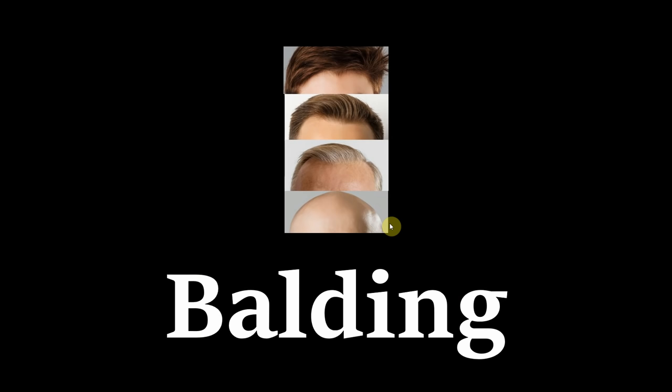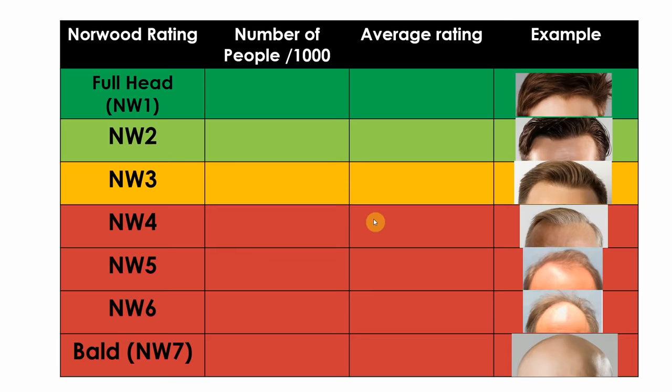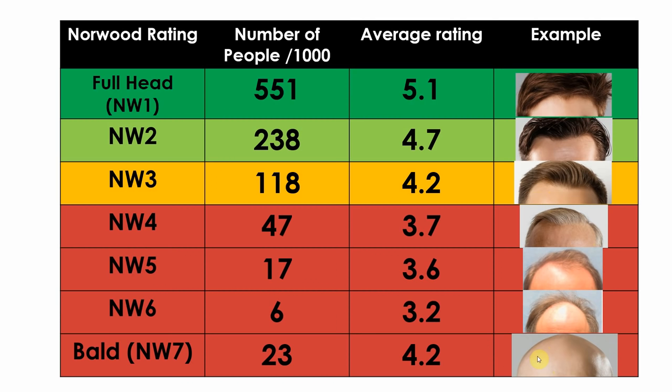Finally, moving on to balding. Now putting everything on a line graph of this data would get very messy very quickly. So instead, I'll just provide the averages and number of people for each one. The average rating for men with full heads of hair, or Norwood 1 on the balding scale, was 5.1. 551 out of 1,000 people had full heads. This shows nearly half of all guys out there are suffering from at least some level of hairline recession. Way more common than you might think. Next up was Norwood 2, the first stage of balding. There were 238 guys at this stage, and their average was 4.7. 118 people had Norwood 3, and their average was 4.2. Very few people had Norwood 4-7, so I'll just fill in their average and number of people here.